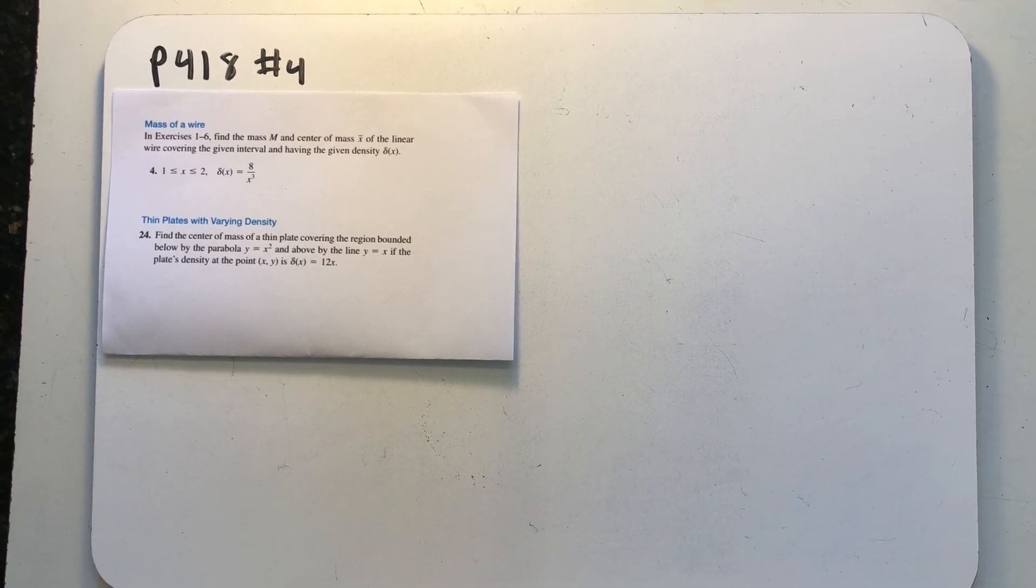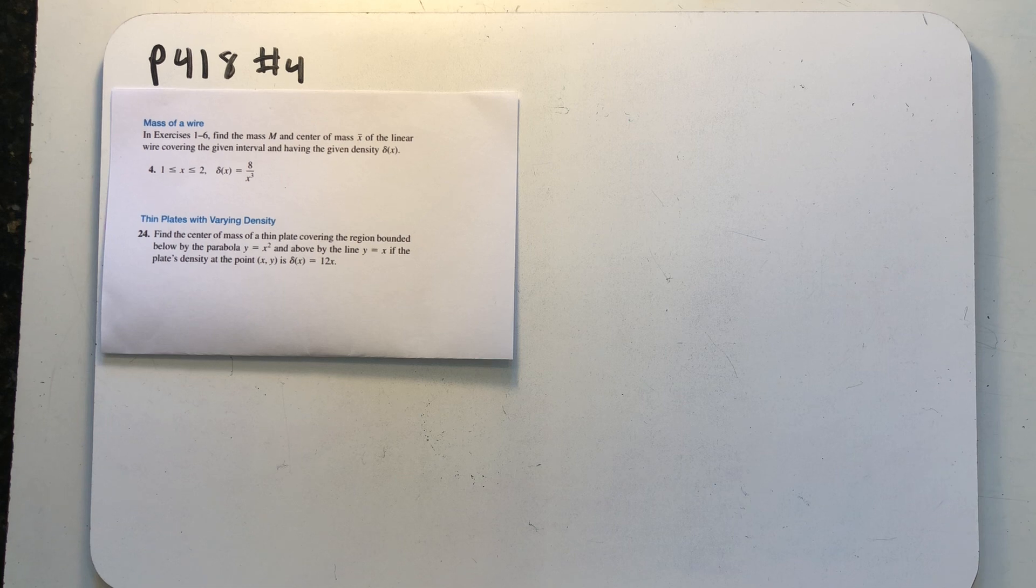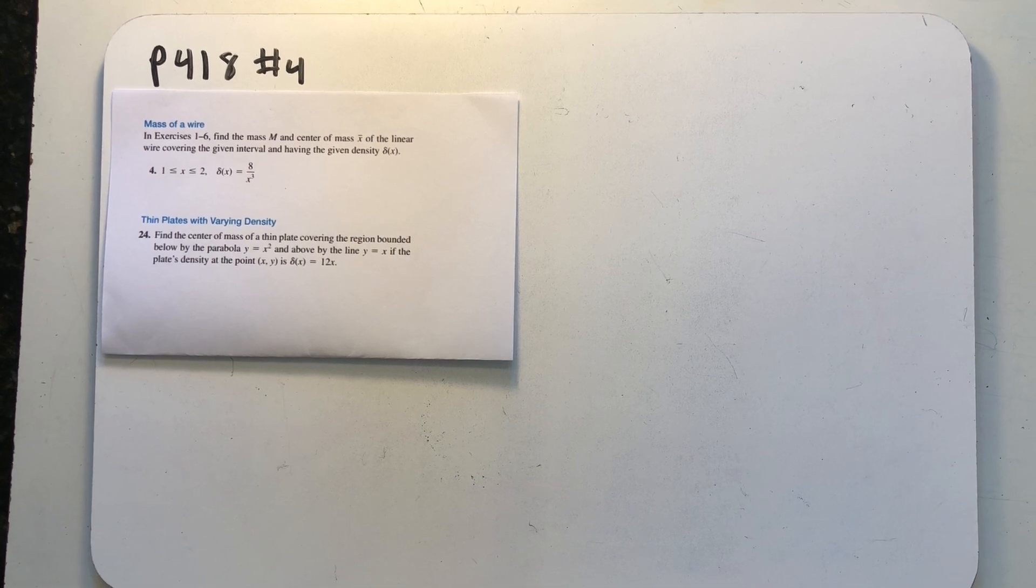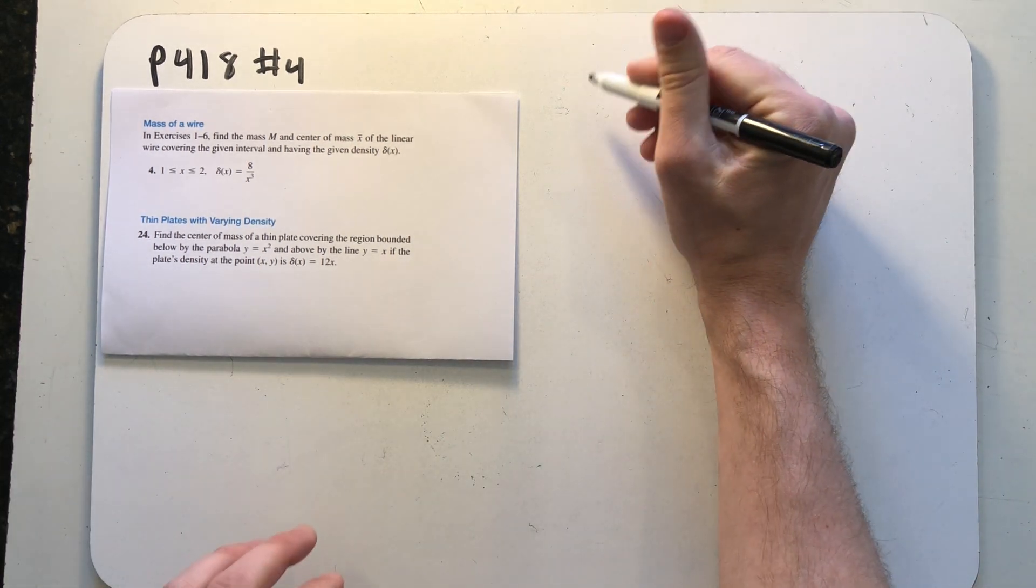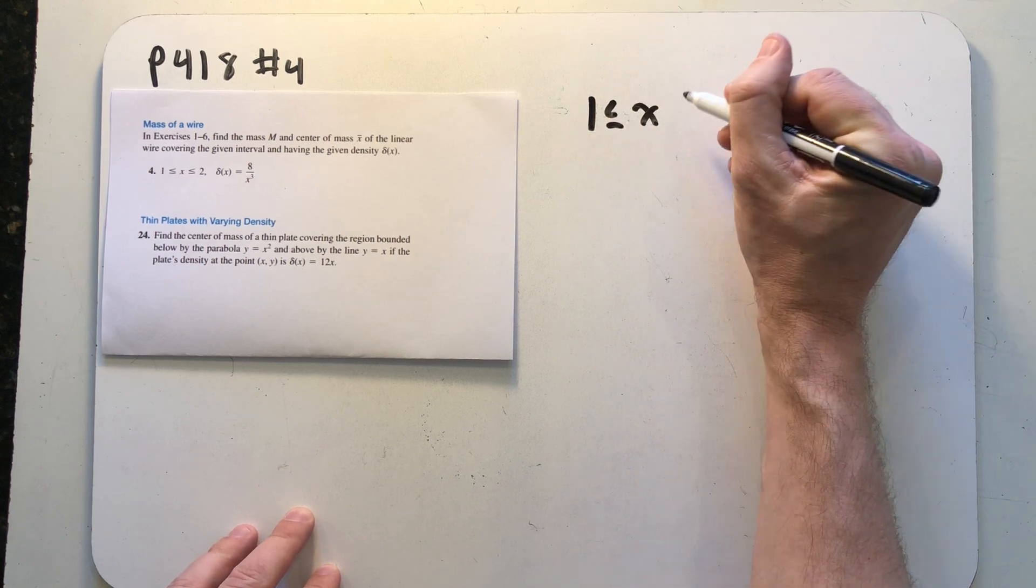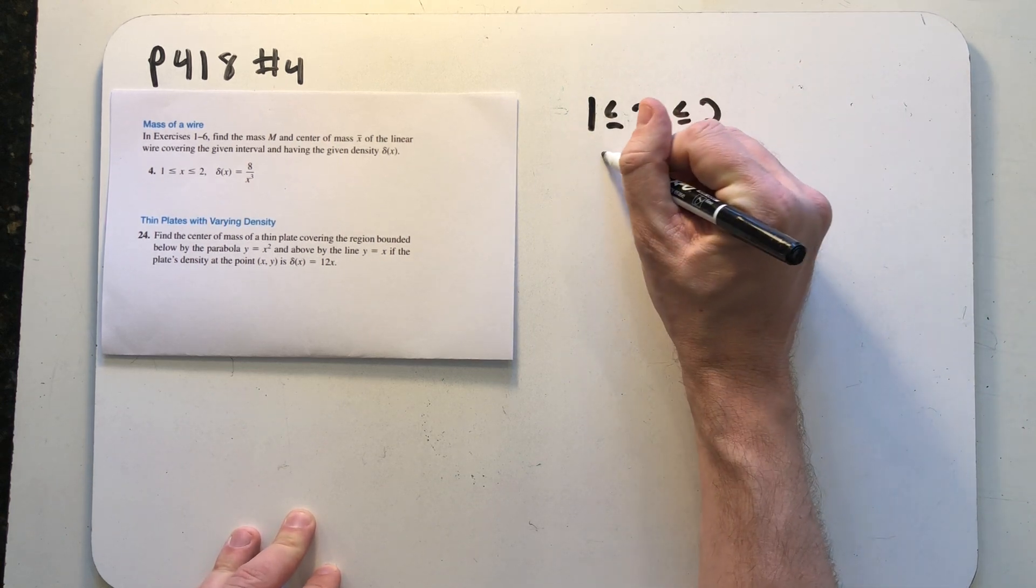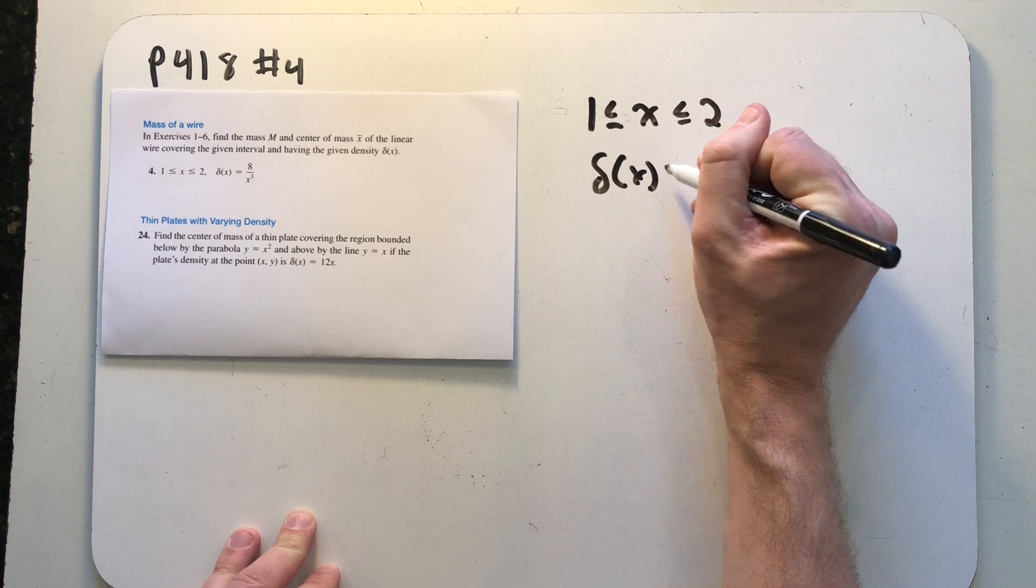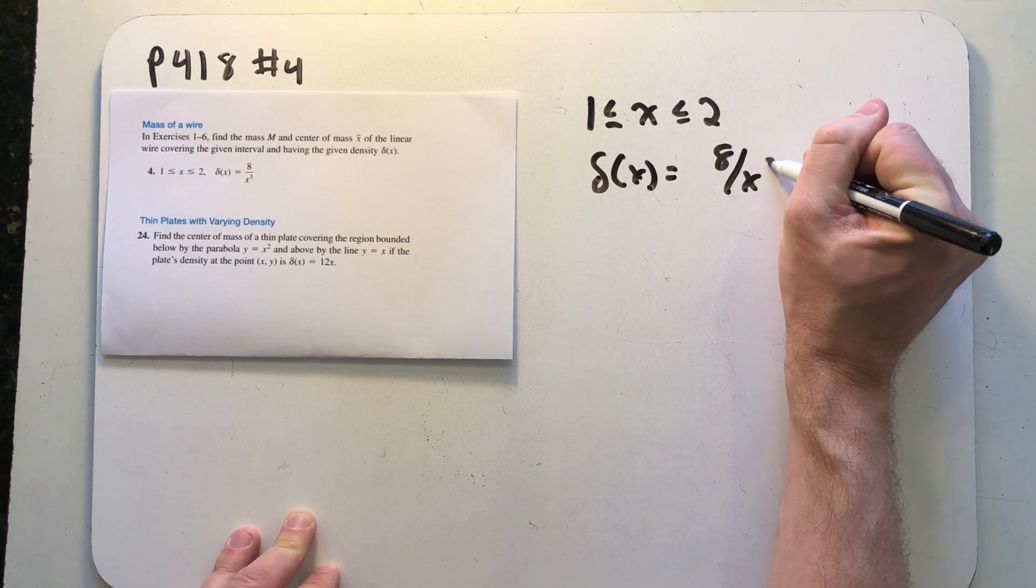Find the mass m and center of mass x-bar of the linear wire covering the given interval and having the given density delta. So we're told our wire is on the interval between 1 and 2 on the x-axis and its density function delta is 8 over x cubed.